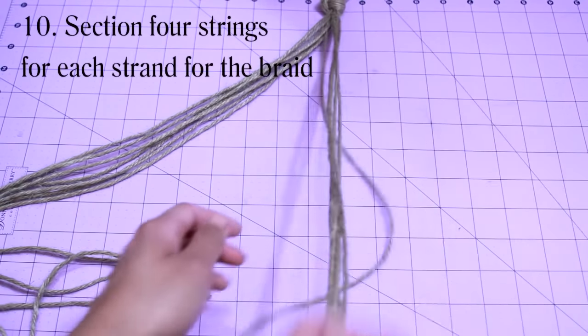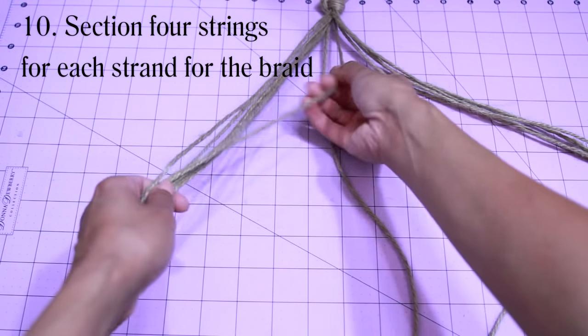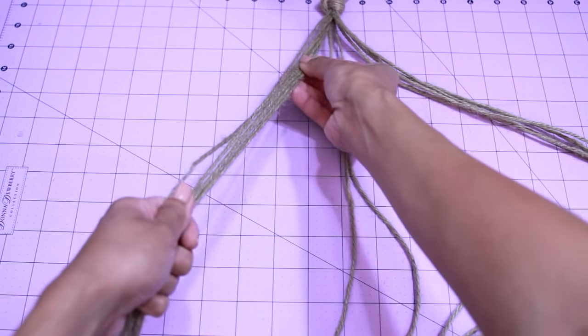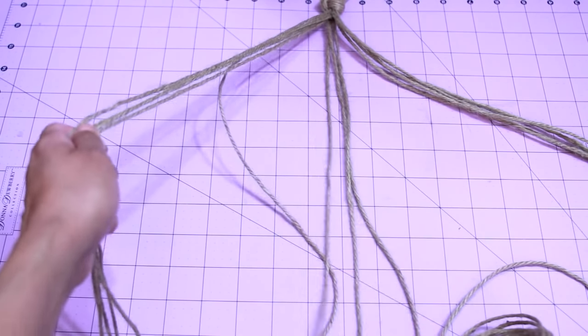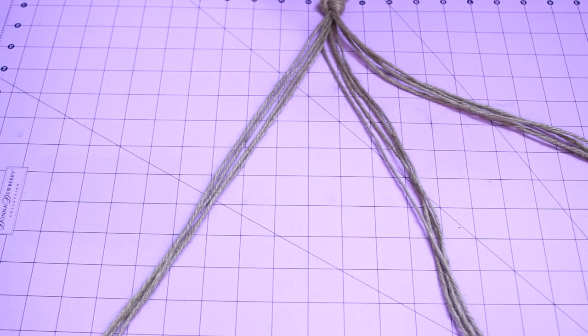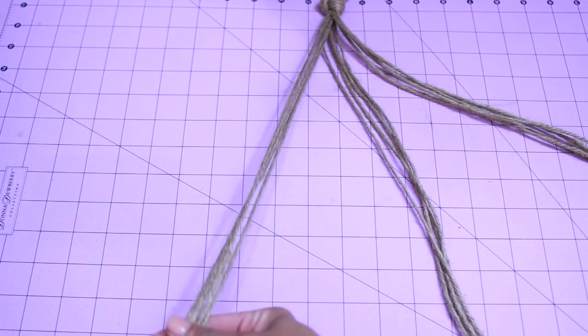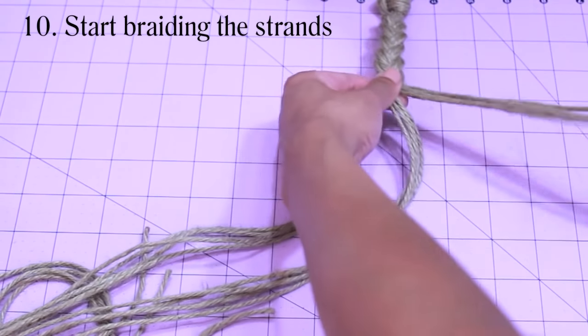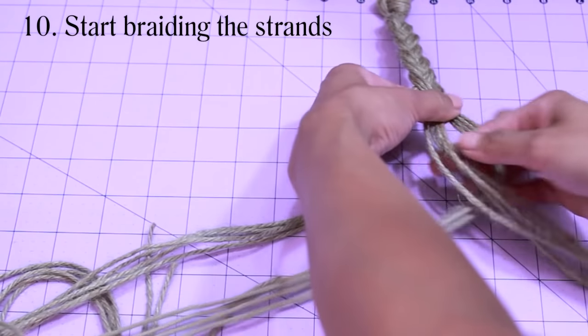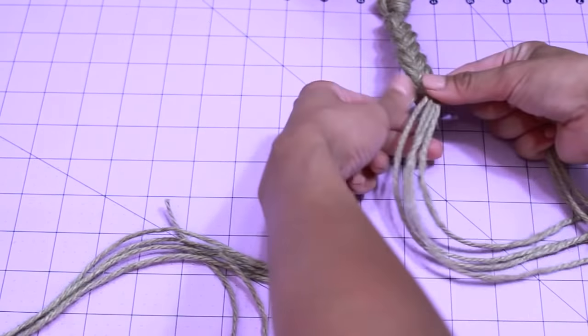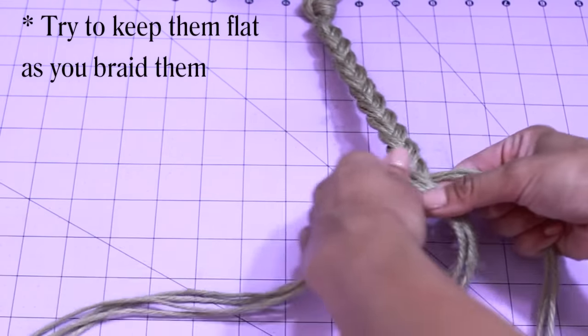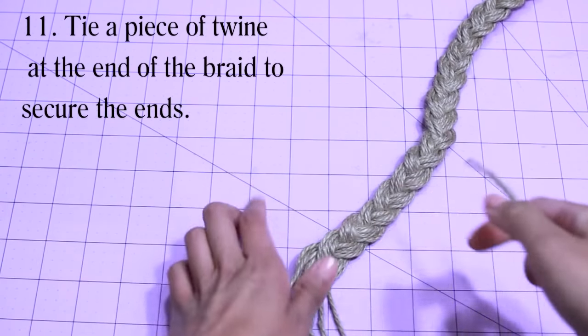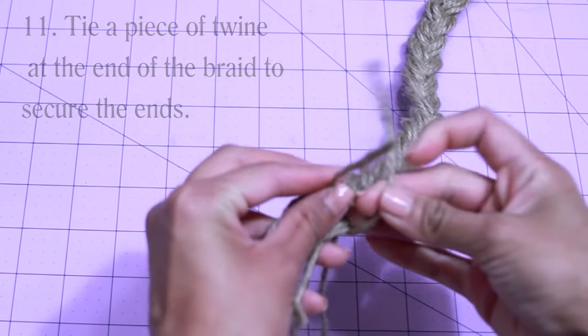Next we're going to section 4 strings for each strand of the braid. And then go ahead and start braiding the strands. Make sure to keep the braid flat as possible. Once you get to the end of the braid, just tie a piece of twine to secure the ends.